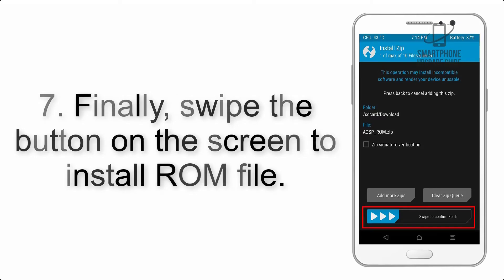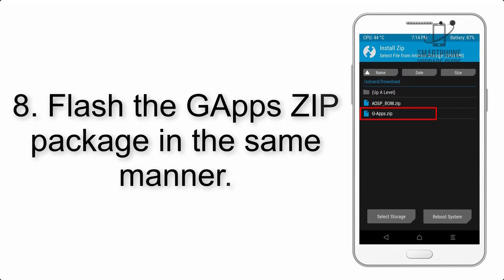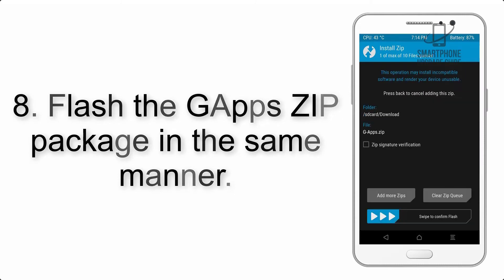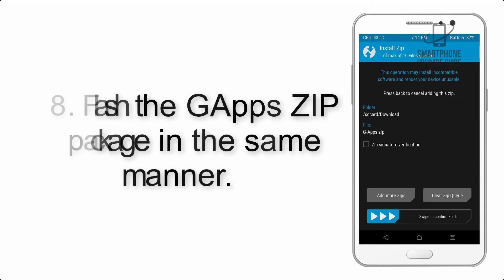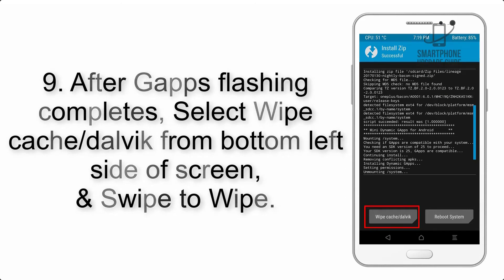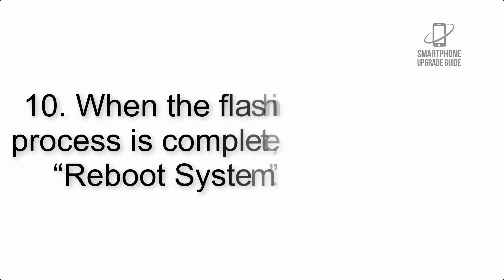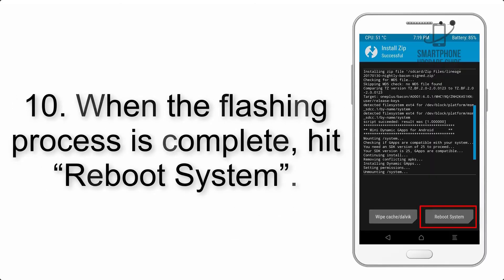Step 7: Swipe the button on the screen to install the ROM file. Step 8: Flash the gapps zip package in the same manner. Step 9: After gapps flashing completes, select Wipe Cache and Dalvik from the bottom left side of the screen and swipe to wipe.